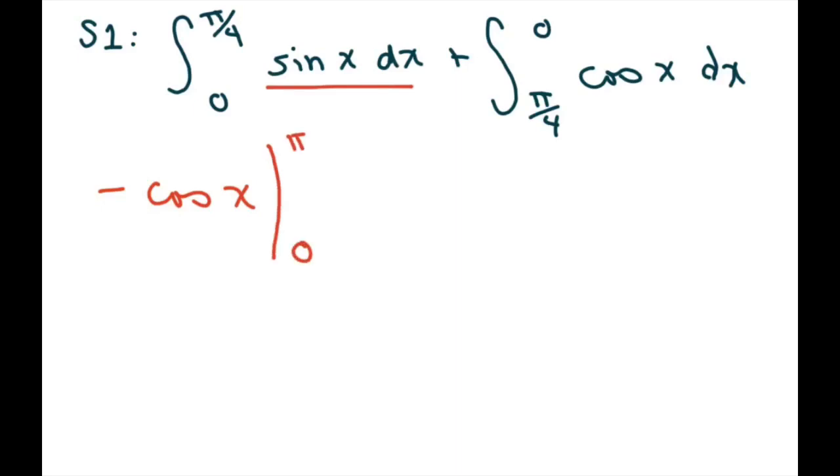zero to pi over four. Plus we're going to do cosine of x and that's just going to be sine of x and you're going to evaluate from zero to pi over four.